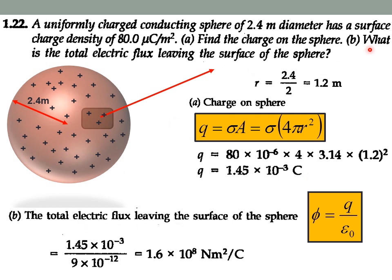The second part of the question asks for the total electric flux leaving the surface of the sphere. Using Gauss's law, φ = Q / ε₀. Substituting the calculated Q and the known value of ε₀, we can easily calculate the electric flux as 1.6 × 10⁸ N·m²/C.